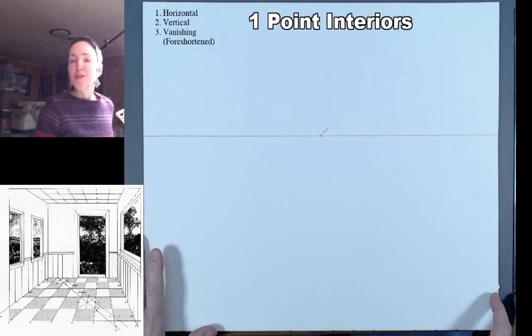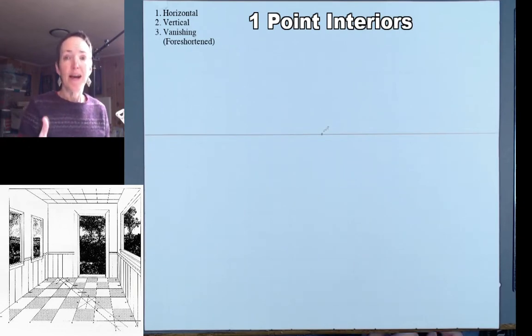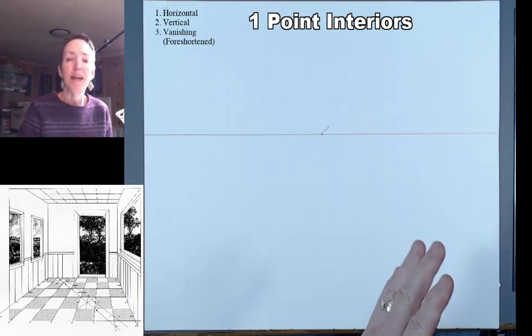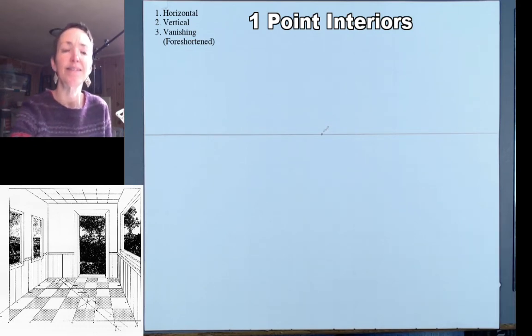And we're back. So we've already drawn some one-point shapes that are seen from the outside of the box, but now we're going to be putting ourselves inside the box so that we can start to construct room interiors. And this may feel a little bit confusing to start with, so I've included this photograph down in the bottom corner so you kind of understand what we're talking about by putting ourselves inside the box.